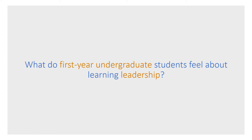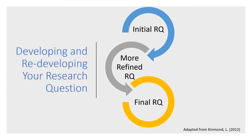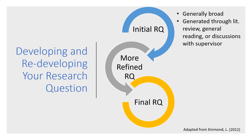As you begin working and writing your research question, you will realize that the process is cyclical. It is very normal for you to write, then rewrite, and then rewrite again your research question to make it more focused and more clear. Typically, the initial research question is broad.